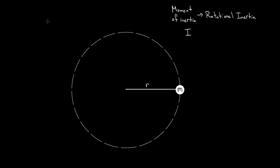Remember, the moment of inertia shows up in the angular version of Newton's second law, which says the angular acceleration is equal to the net torque divided by the moment of inertia — since moment of inertia and rotational inertia are the same thing. We're dividing by the rotational inertia, so if it's big — it's in the denominator — you're going to get a small angular acceleration alpha. If the moment of inertia is small, you'll get a larger angular acceleration.